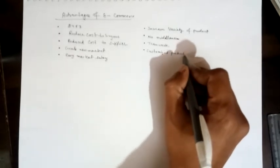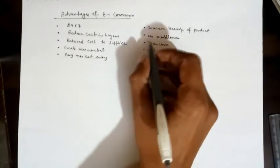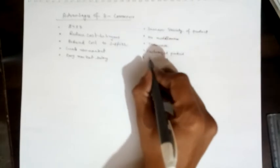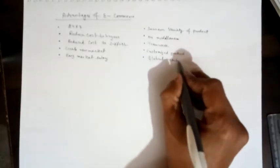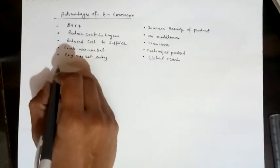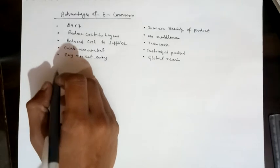Global reach means 24 by 7 availability - you can place an order from anywhere and get delivery to your house. You can also swap or return products if you don't like them.